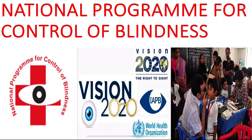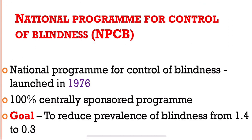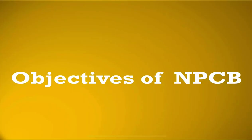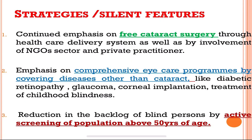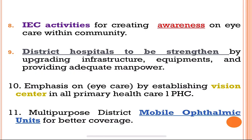Welcome back. In the chapter of health programs in India, we were discussing about the National Programme for Control of Blindness. In Part 1 of the video, we studied about the introduction — the program was launched in the year 1976 and the goal was to reduce the prevalence of blindness from 1.4 to 0.3, followed by the objectives and the strategies already discussed in the previous video.